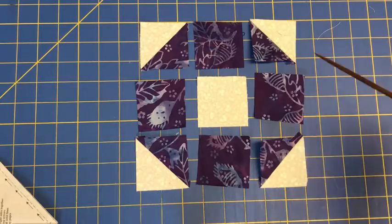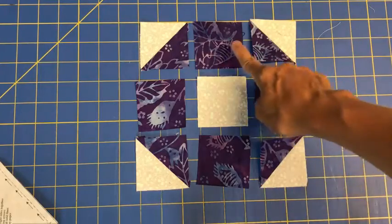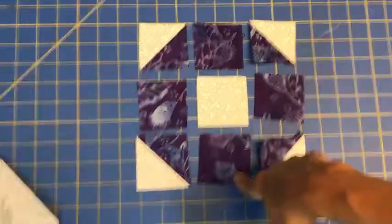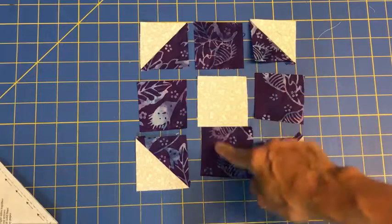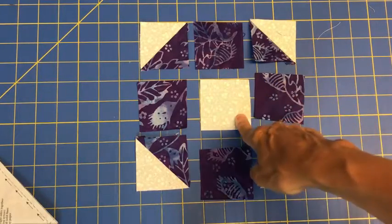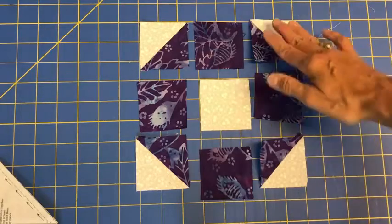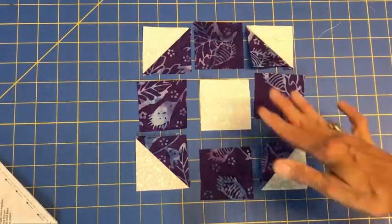So here is the block, and you will see that these pieces right here, these squares, you'll need four of the purple. They are, I'm sorry, they're two and a half inches, as is the one in the middle. So all of the squares are two and a half inches. Now we slide in the units that we have created.